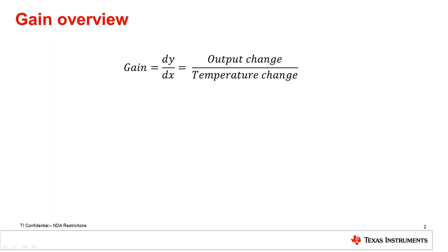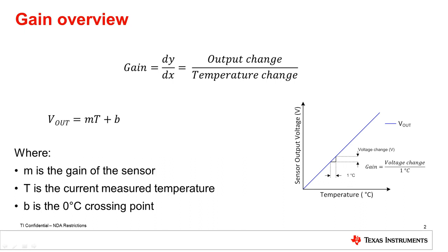Because the term can be used interchangeably, we will reference gain for the rest of the video. If the output gain does not vary across temperature, it can be used to linearize the output voltage of the temperature sensor using the equation Vout equals mT plus B, where M is the gain of the sensor, T is the current measured temperature, and B is the voltage of the sensor at 0 degrees Celsius. Solving for T gives an easy conversion from the measured Vout to temperature.